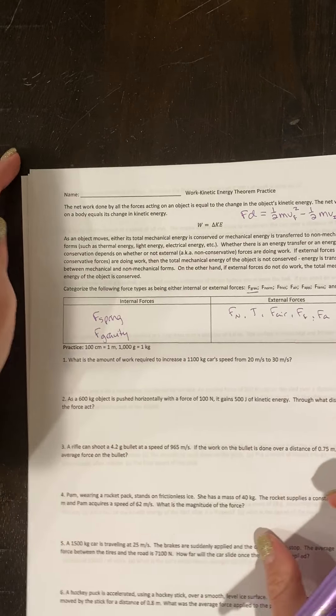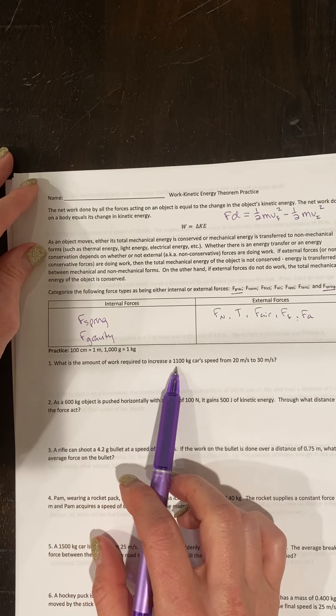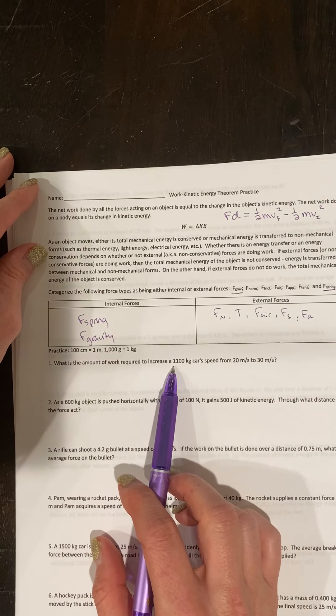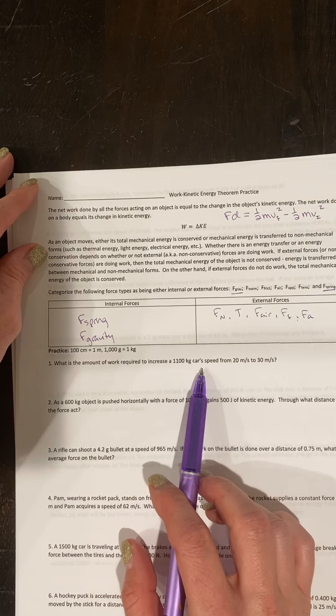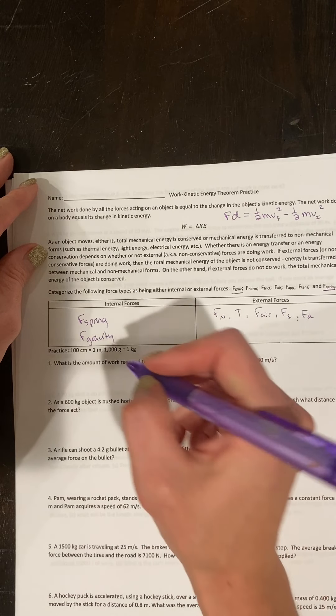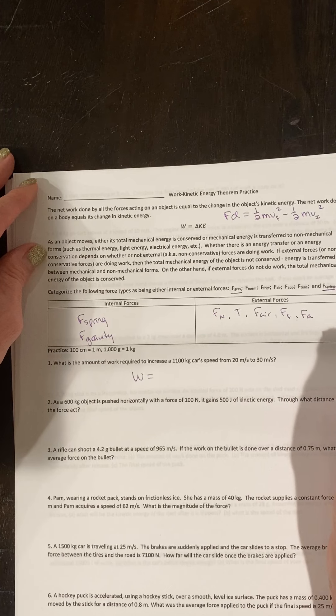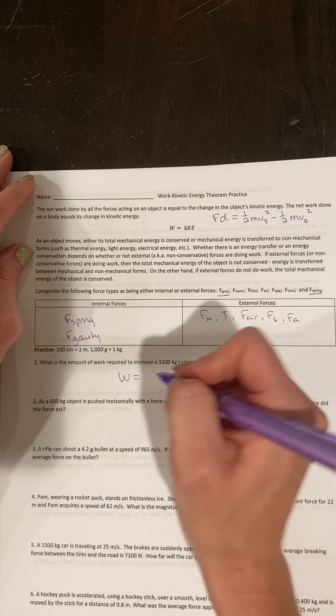Let's do a few problems together. What is the amount of work required to increase a 1,100 kilogram car speed from 20 to 30 meters per second? So we want the work being done and we were given a final and initial velocity, so we want to keep this part of our equation expanded.